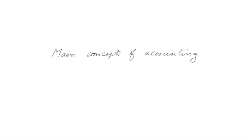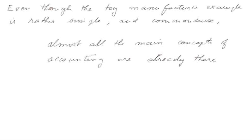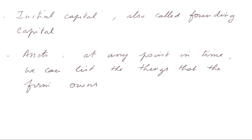Even though the toy manufacturer example is rather simple and common sense, almost all the main concepts of accounting are already there. We saw the initial capital, also called founding capital. In our example, it was 50,000 euros gathered at first in order to pay for the various expenditures before we got some cash from operations.